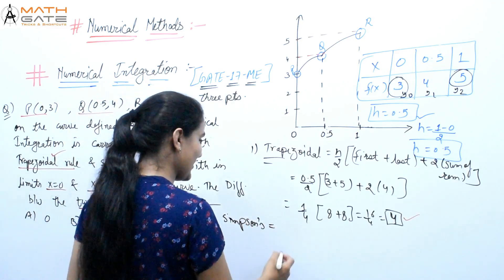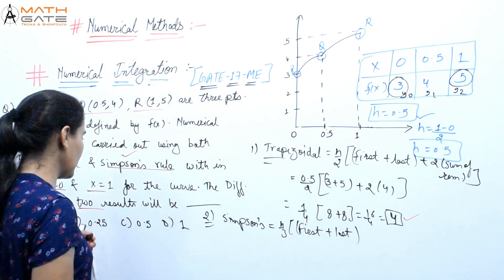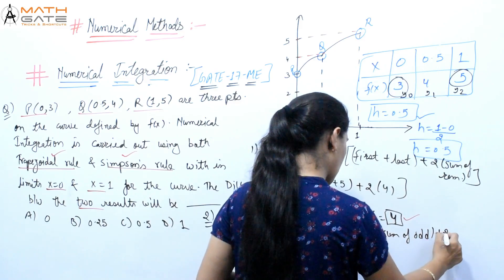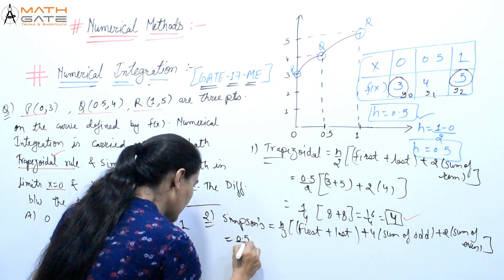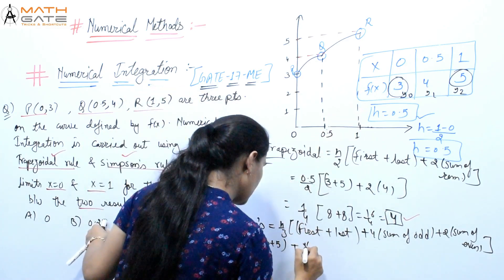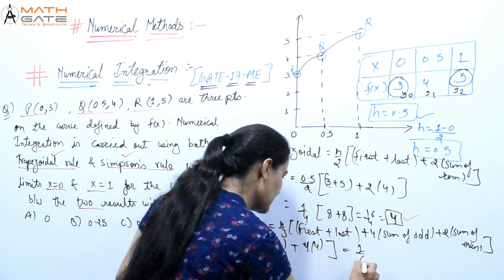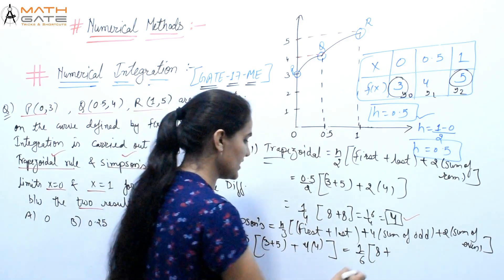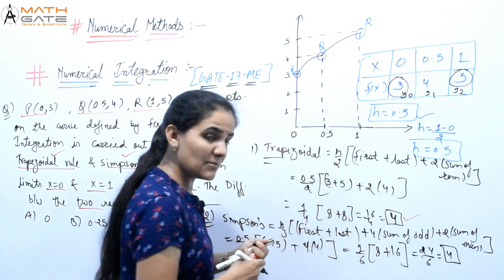Now applying Simpson's rule: h/3 × [first + last + 4×(odd terms) + 2×(even terms)]. h = 0.5, so 0.5/3 = 1/6. First + last = 3 + 5 = 8. Odd term y₁ = 4. No even interior terms, so: (1/6) × [8 + 4×4] = (1/6) × [8 + 16] = 24/6 = 4. So Simpson's gives 4.